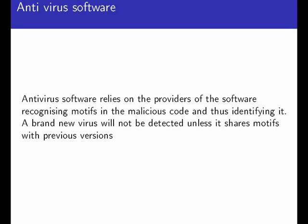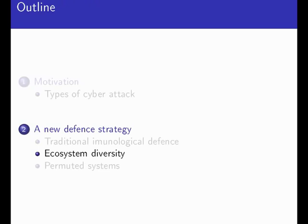That's the same basic model used by antivirus software. It relies on providers recognising motifs common in viruses. A brand new virus will not be detected unless it shares certain motifs — certain repeated sequences of bytes that occur in previous versions of the virus. It's easy to scan through a file to detect these, but unless you know what the patterns are, you won't be able to detect the virus. Therefore, new viruses can spread readily until antivirus software develops a defence.